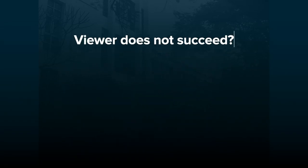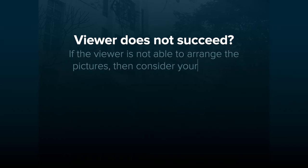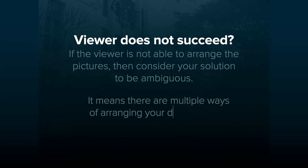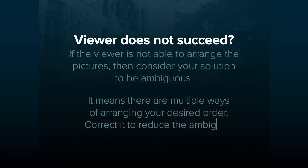What if the viewer does not succeed in arranging the pictures as you desired or planned? If the viewer is not able to arrange the pictures, then consider your solution to be ambiguous. In this context, ambiguous means there are multiple ways of arranging your desired order. Correct it to reduce the ambiguity by altering the solution.